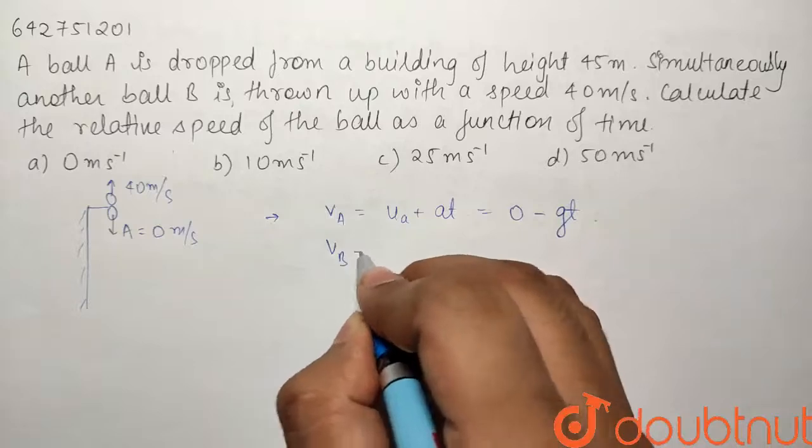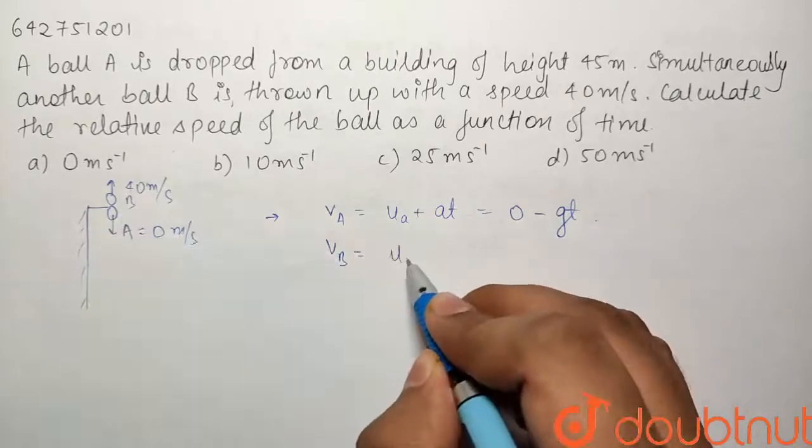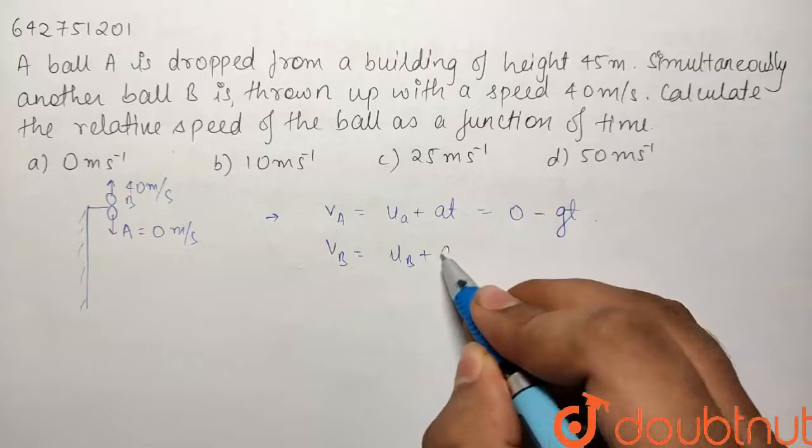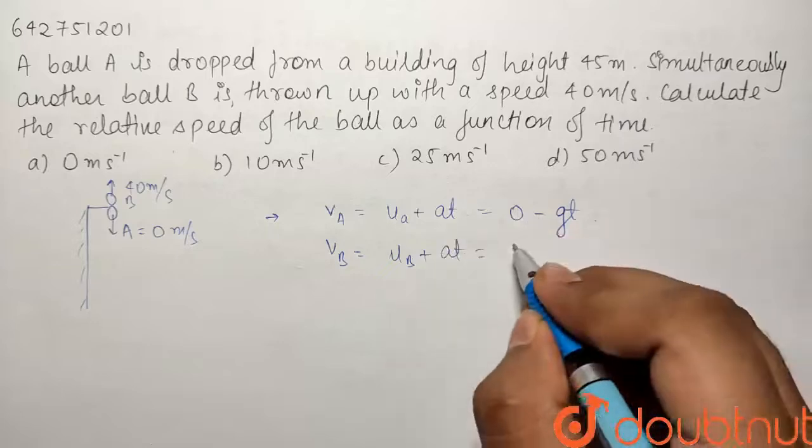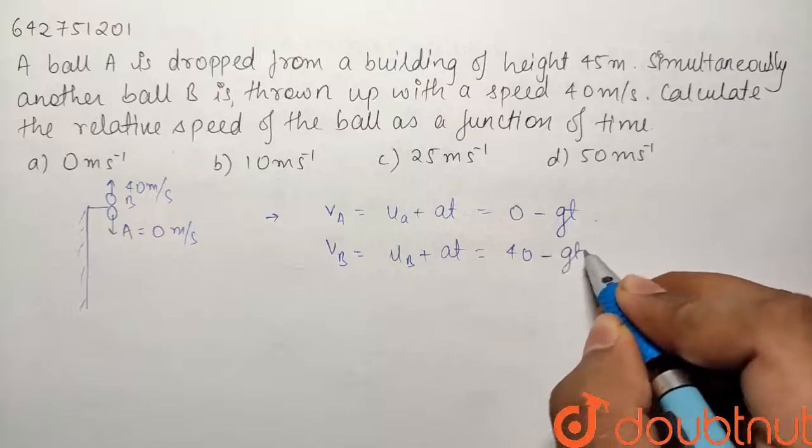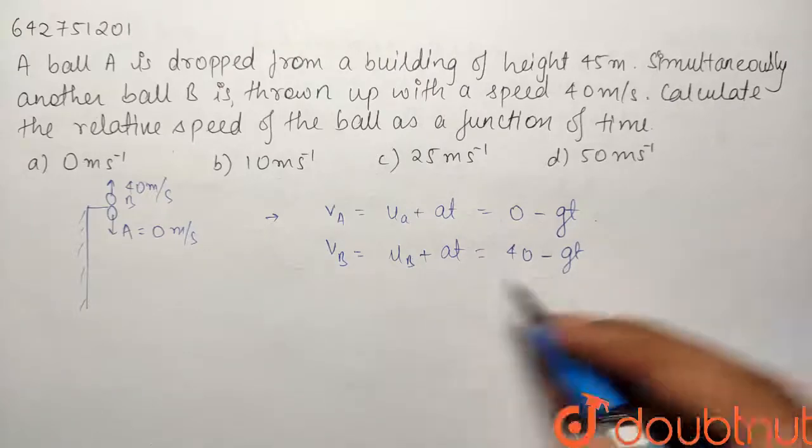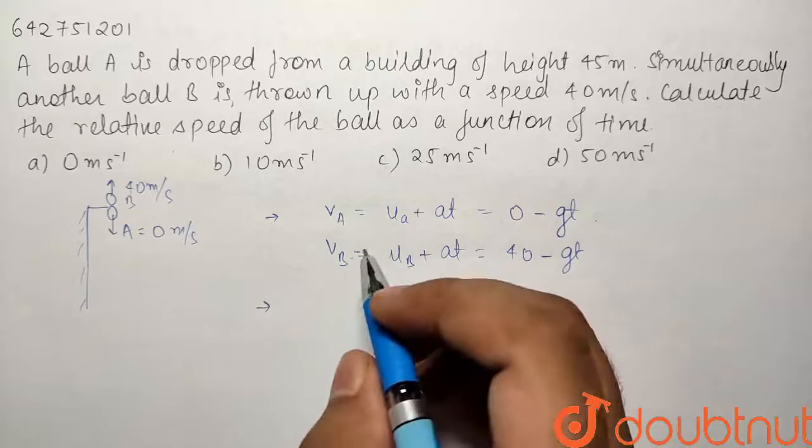And similarly if we talk about Vb, Vb will be equal to Ub plus At. Now Ub is equal to 40 meter per second as it is in upward direction minus again Gt because G is in downward direction. So its sign will be negative multiplied by t.